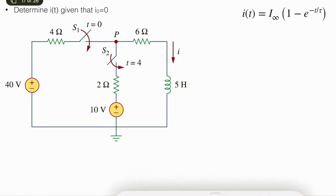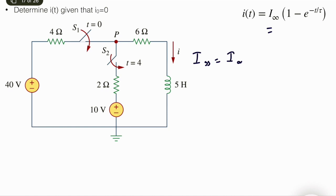So what is i∞? i∞ is the steady-state current of the inductor under this condition — it's not the actual current at infinity. The second switching can affect this i∞. i∞ is the steady state if we keep everything the same: same equivalent resistance, same input source, and same inductance.